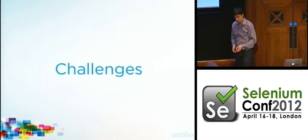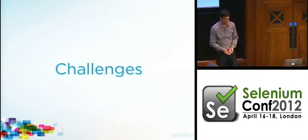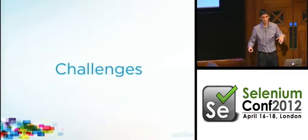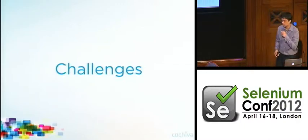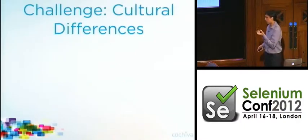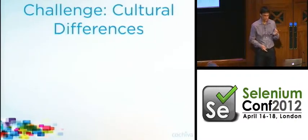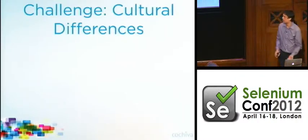So now we have a small suite of automated functional tests for our iOS application. The challenges I'm going to talk about now have more to do with trying to get value out of those tests. I'm going to talk about cultural differences — the same word or concept can mean different things to different cultures.